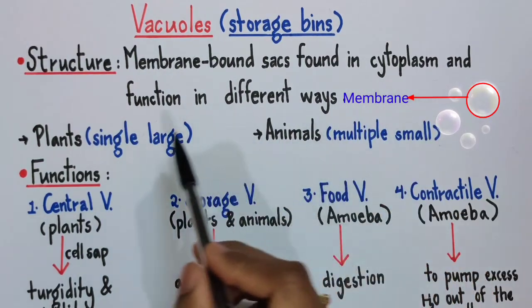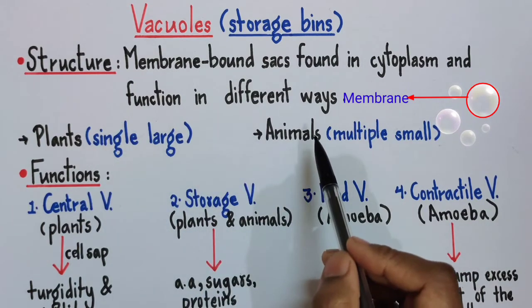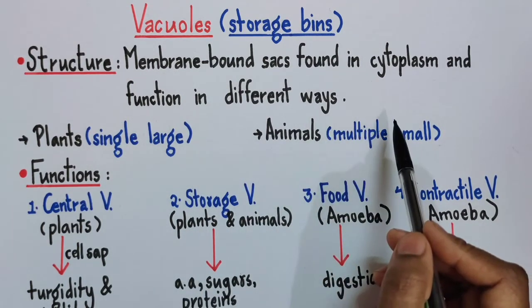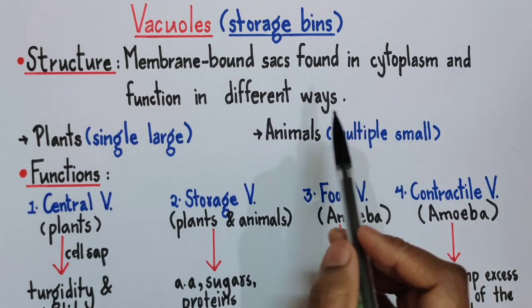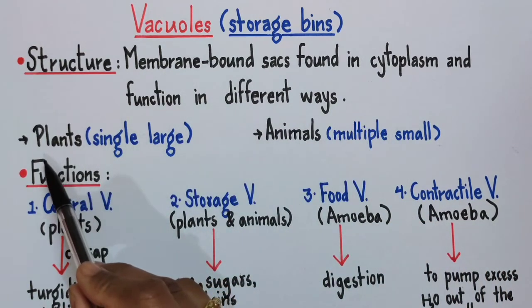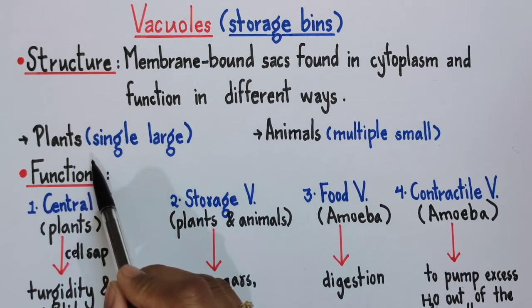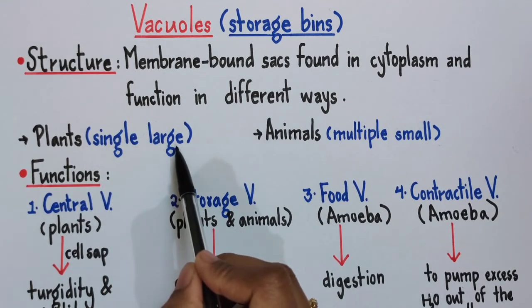They are found in plant cells, animal cells, even in unicellular organisms like amoeba and paramecium. However, it is generally seen that almost all plant cells have a single large vacuole which we call the central vacuole.